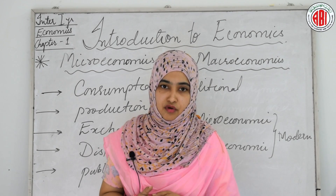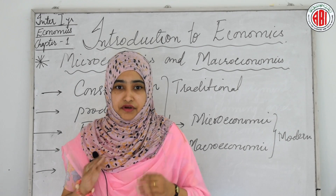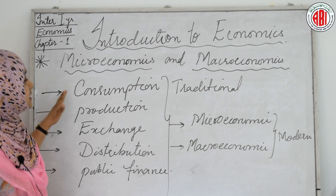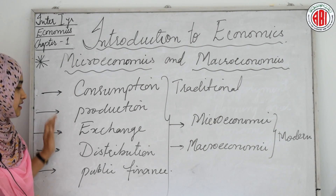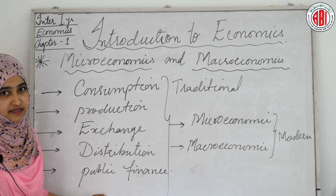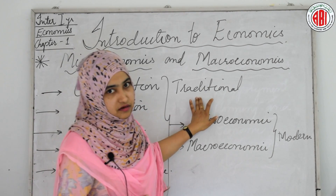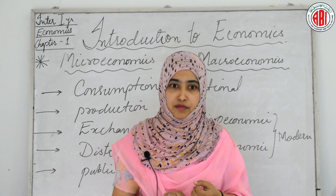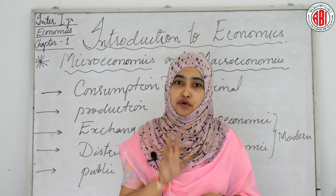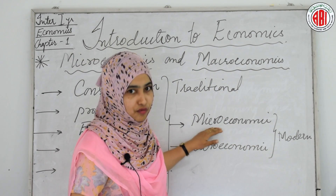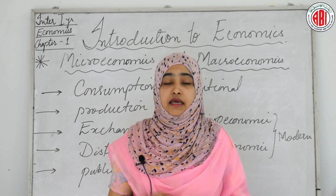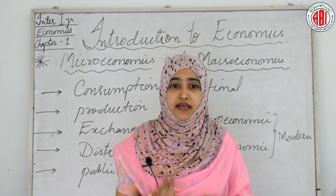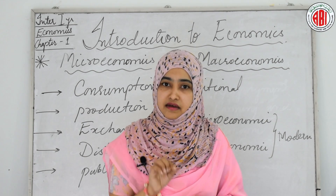Traditionally, the subject matter of economics has been divided into five groups: consumption, production, exchange, distribution, and public finance — these come under the traditional branches of economics. In modern economic theory, they are divided into two branches: microeconomics and macroeconomics. The University of Oslo first used these two terms to explain the study of economics in the year 1933.